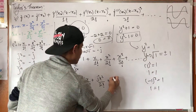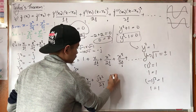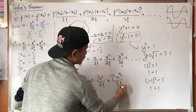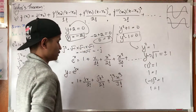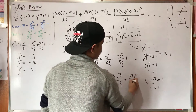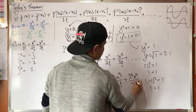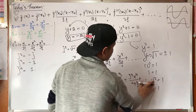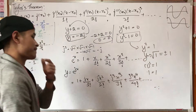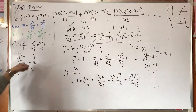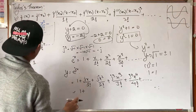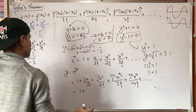We continue with the series: plus j cubed x cubed over 3 factorial, plus j to the power of 4 times x to the power of 4 over 4 factorial, and so on for higher powers.